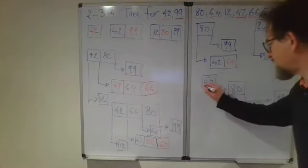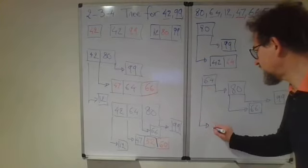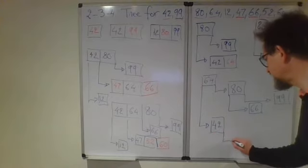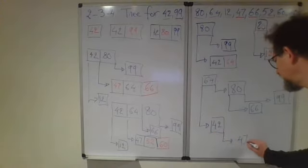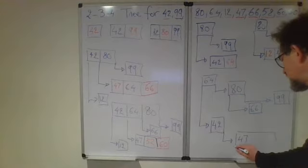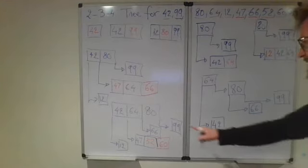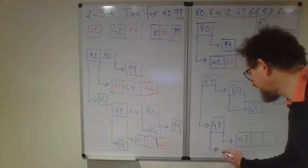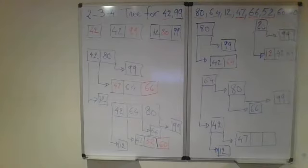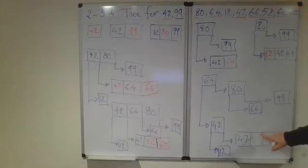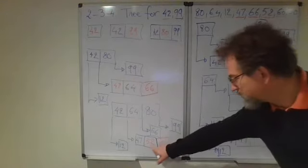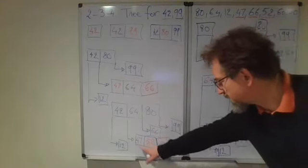The left of 64 is 42, and 42 has two children, 47 with 52 and 60 in it, and 12. And this is where 50 needs to be inserted. But you see, 50 would need to become in this four-node, and we need to split it.